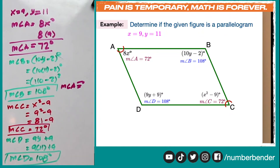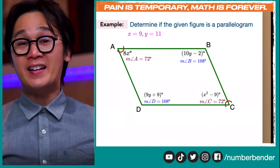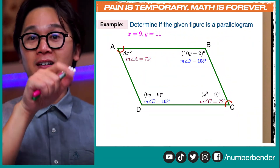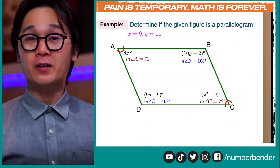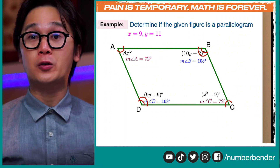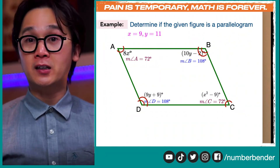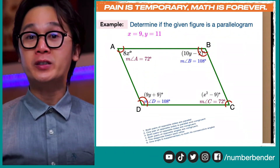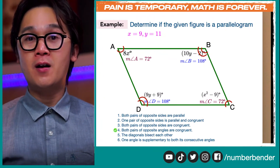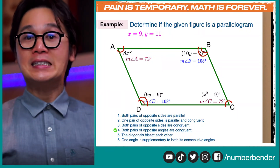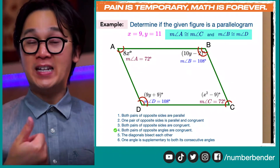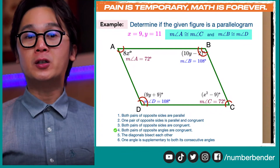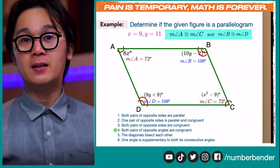So we're able to prove that both pairs of opposite angles are congruent. Angle A and angle C are both 72 degrees, and angle B and angle D are both 108 degrees. By satisfying condition number four — both pairs of opposite angles are congruent — we've mathematically proven that this quadrilateral is indeed a parallelogram.